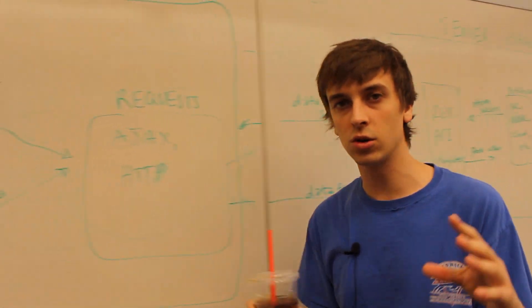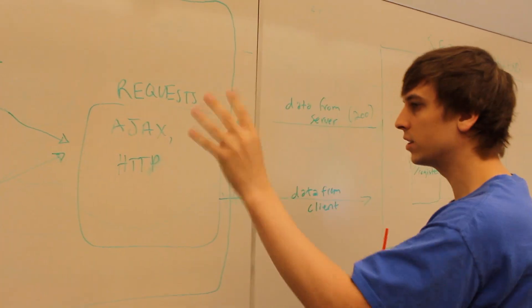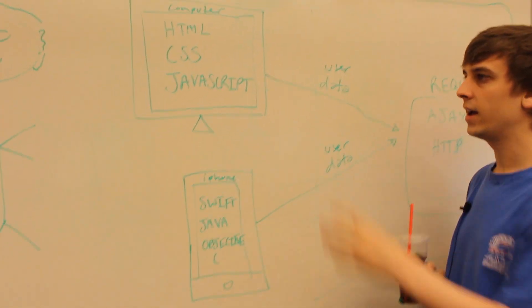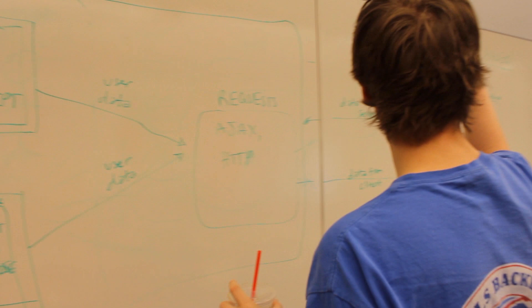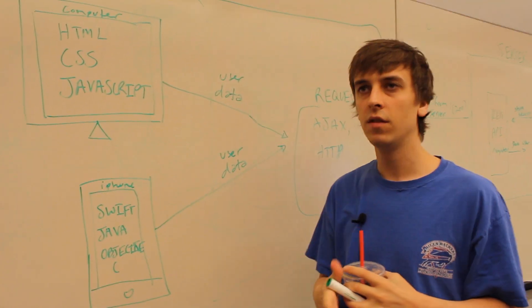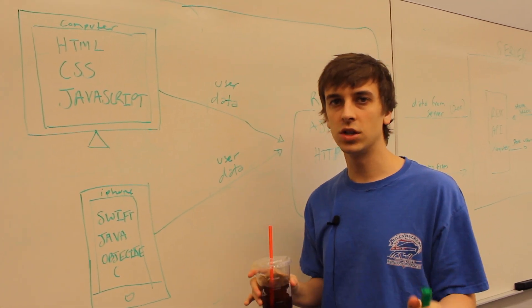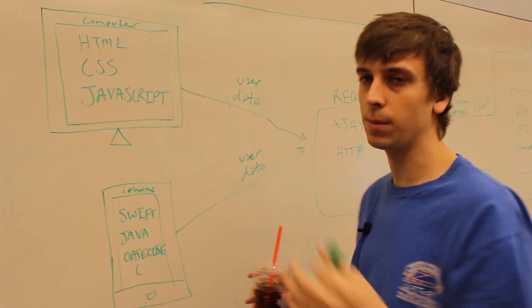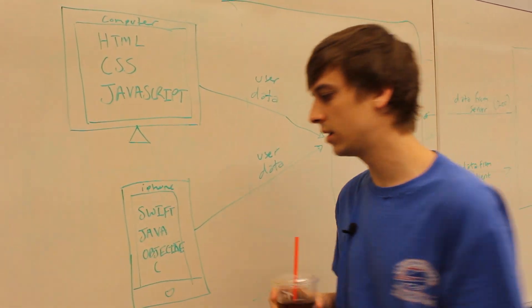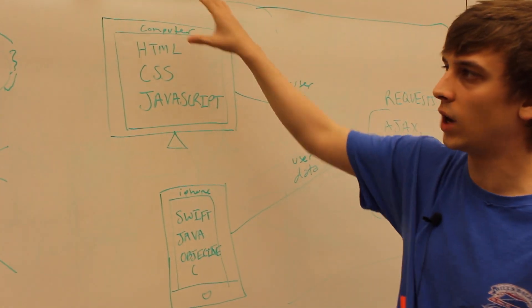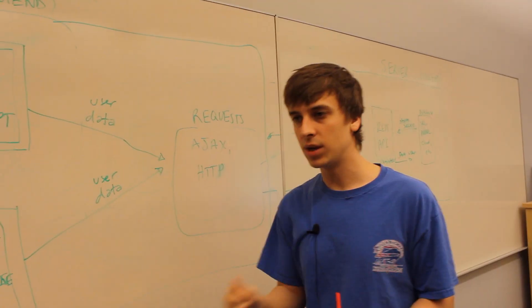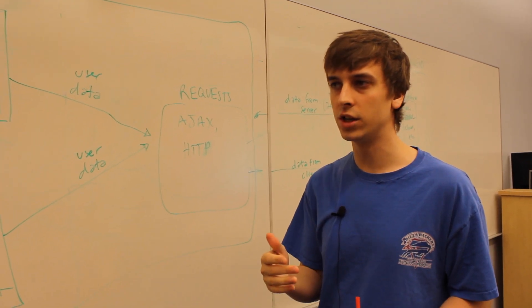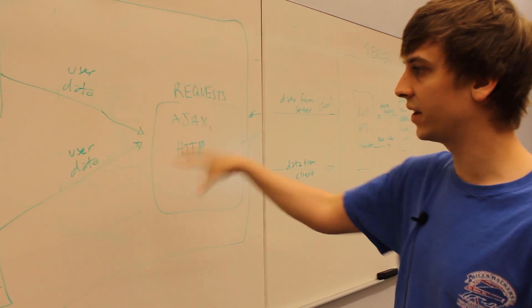This applies across the board — not just for user login, that's just an example. For all data: anything the user is interacting with that needs to be stored in a database or requires server-side data manipulation, you send it to the server and send the results back. The client is the front end — the stuff people see — and the back end is the server-side stuff: API, database, data manipulation, web sockets, and so on.